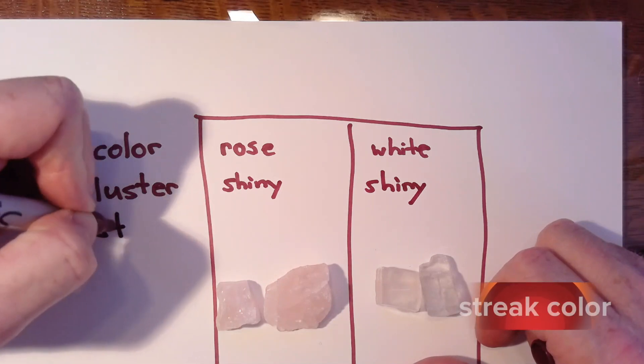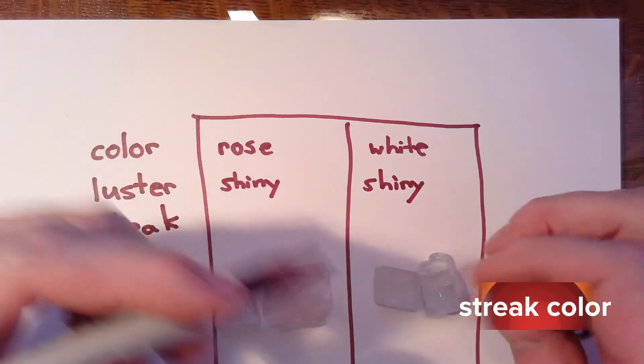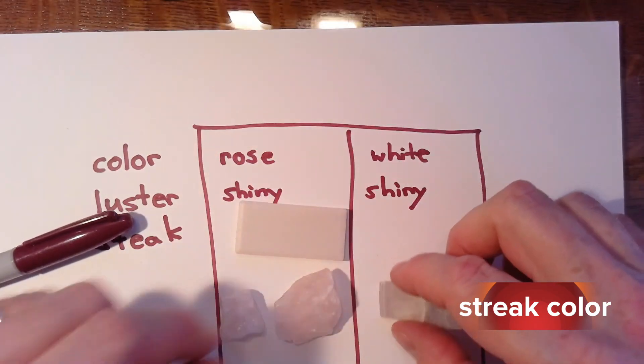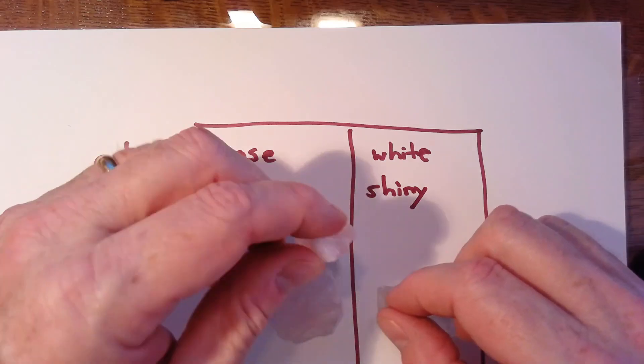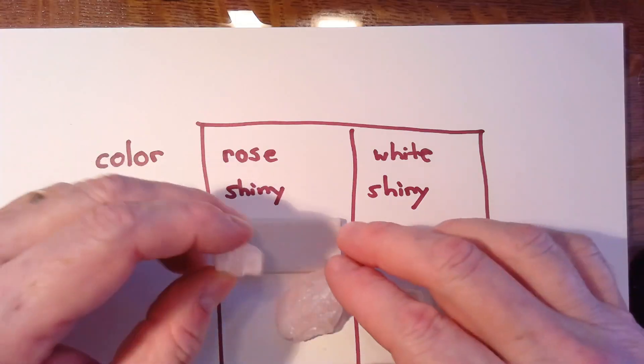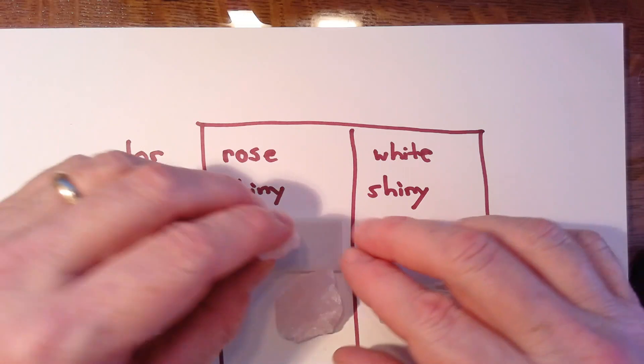Next I'm going to look at streak, which is exactly what it sounds like. I'll use a streak plate — this piece of tile — and take each mineral and streak it across the plate, then look at the color left behind. The first sample, the shiny rose on the left — if I streak that, it doesn't appear to leave anything behind. So for streak, I'm going to record none.